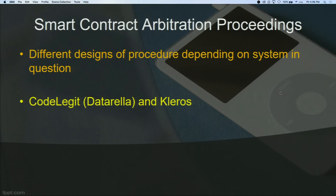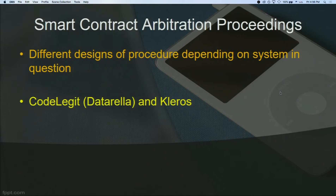If you have a supply chain, you're bound to have disputes arising from its management. If we incorporate a smart contract within the supply chain, and something goes wrong, do we just wait for the system to self-execute and then go to court? That can be counterproductive. One idea is to incorporate an arbitration clause — an arbitration code — within the smart contract that the supply chain is based upon.